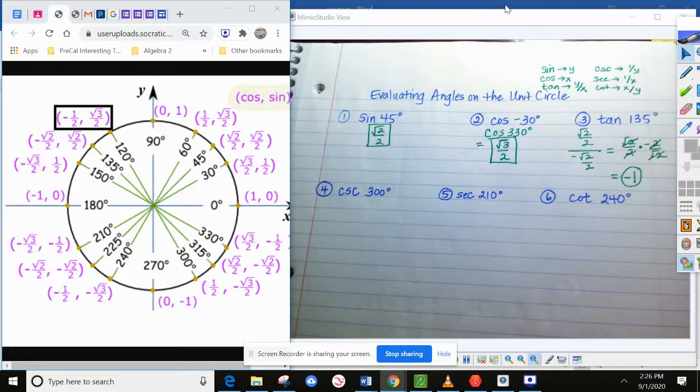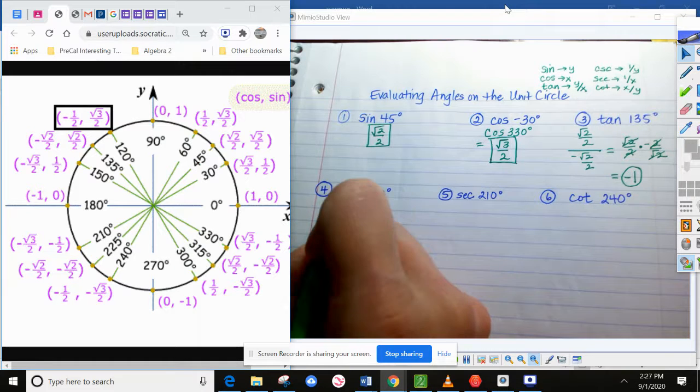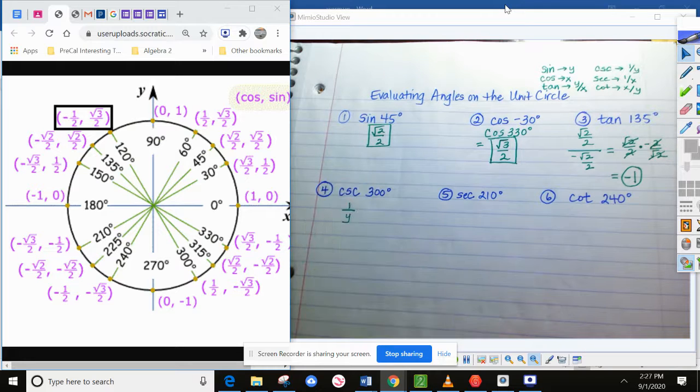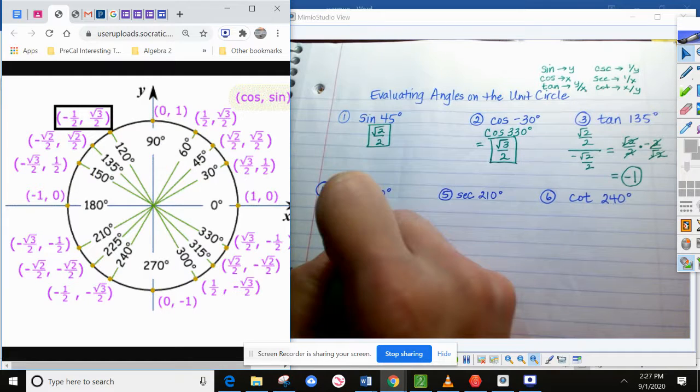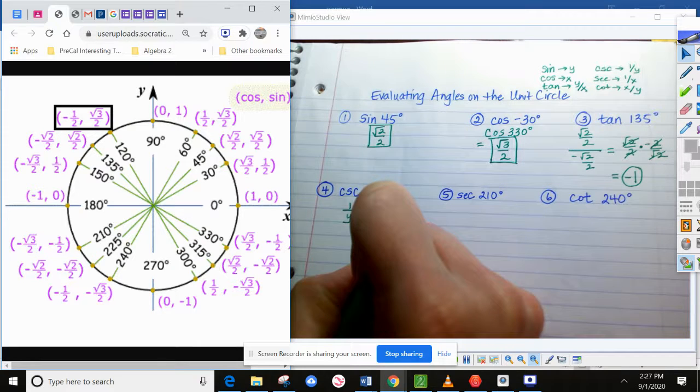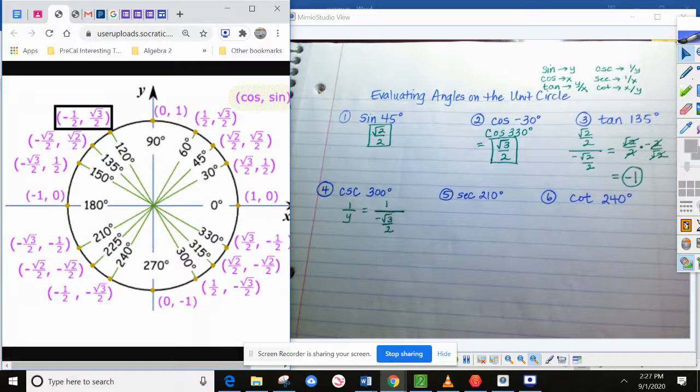All right, let's move on to cosecant. In terms of a math book, what it would tell you probably is take the y coordinate and do 1 divided by that. So let's find that first. At 300, the y coordinate is negative square root 3 over 2. So 1 divided by negative square root 3 over 2. This is another one of those problems you could do a keep, change, flip on. But I'll tell you what's going to happen.